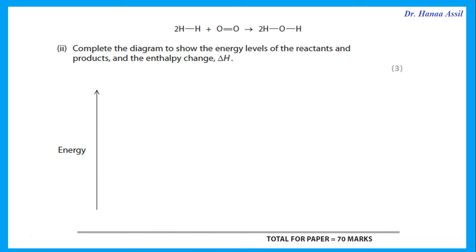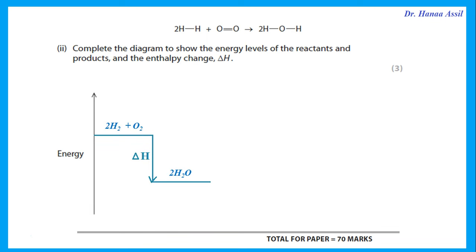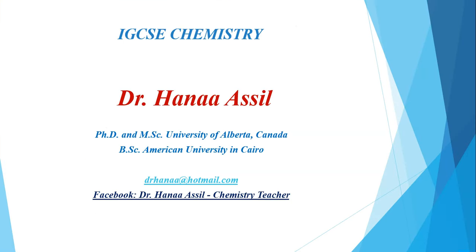Complete the energy level diagram to show reactants, products, and ΔH. Since ΔH is negative, the reaction is exothermic, so the reactants (2H₂ + O₂) are drawn at a higher energy level than the products (2H₂O). The difference in energy between reactants and products represents ΔH. That was the last question in the paper — I hope you understand the explanation, and good luck in your exams.